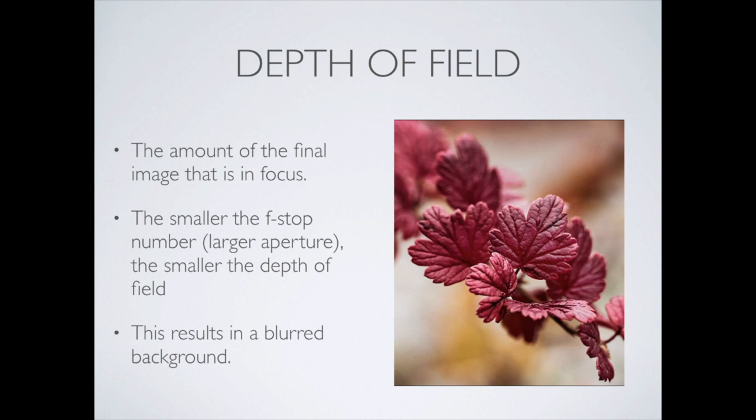Depth of field is the amount of the final image that's actually in focus — the part that's sharp or clear. Generally speaking, the smaller the f-stop — and this is a weird one because we refer to aperture as f-stop, and it's kind of an inverse relationship — the smaller that number, the larger the aperture really is. So the more light that comes into the camera, the smaller the depth of field. The bigger the lens is, the more light comes in, the narrower the depth of field. I'll show you a slide that makes more sense of this.